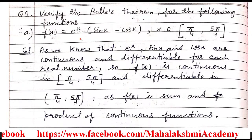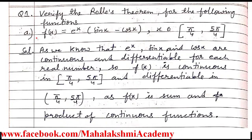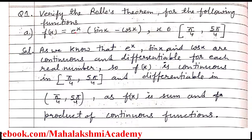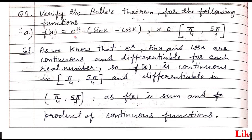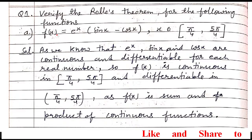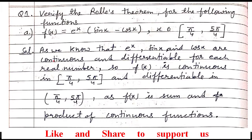We will start with part (a) of question number 1. Part (a) is f(x) equals e^x times (sin x minus cos x). This function is formed by three functions: the exponential function and the trigonometric functions sin x and cos x. We can say that f(x) is the sum and product of these three functions.